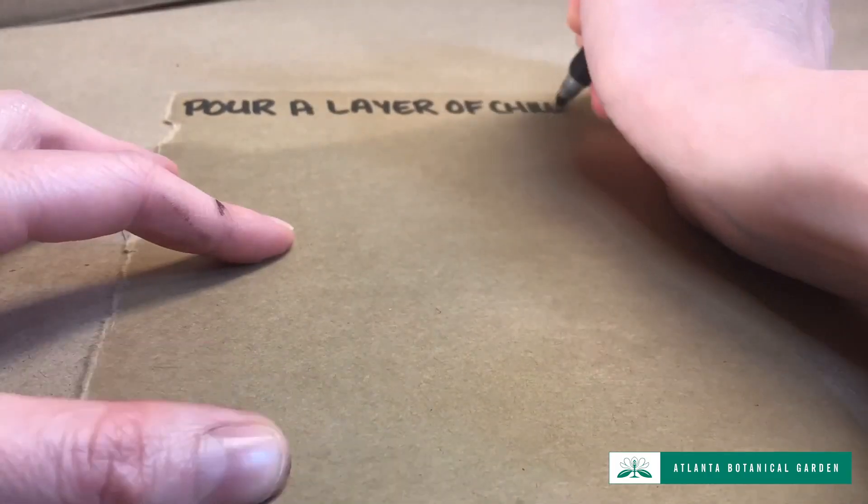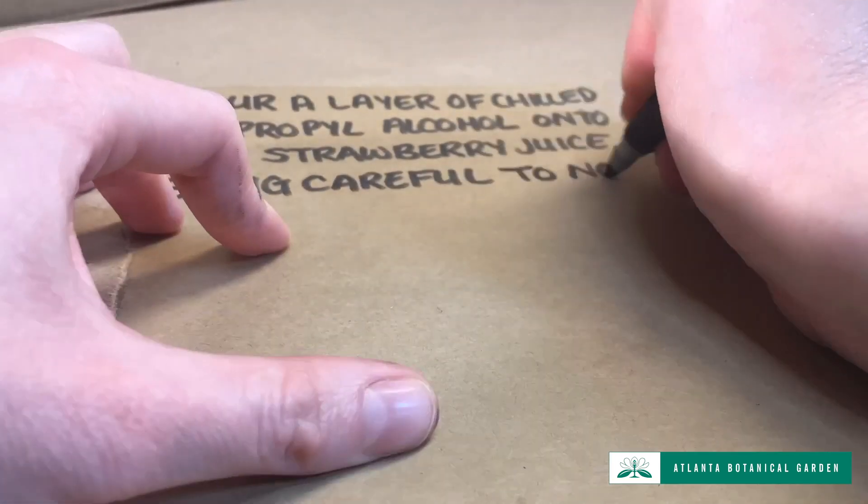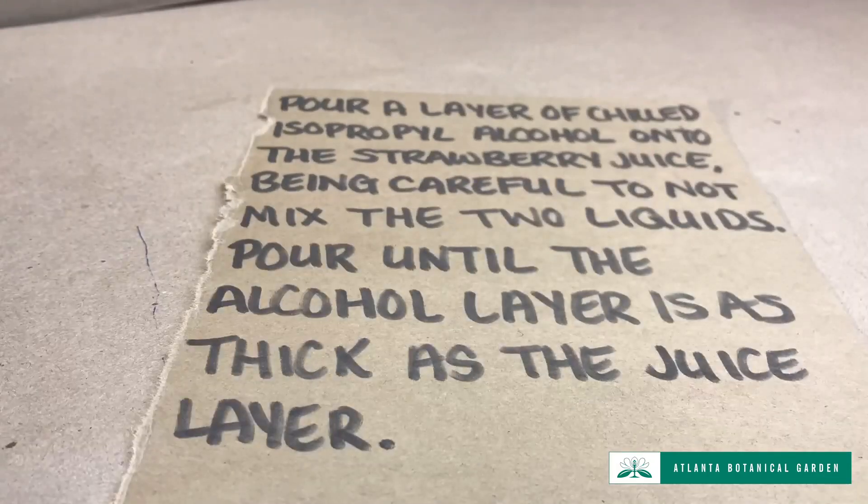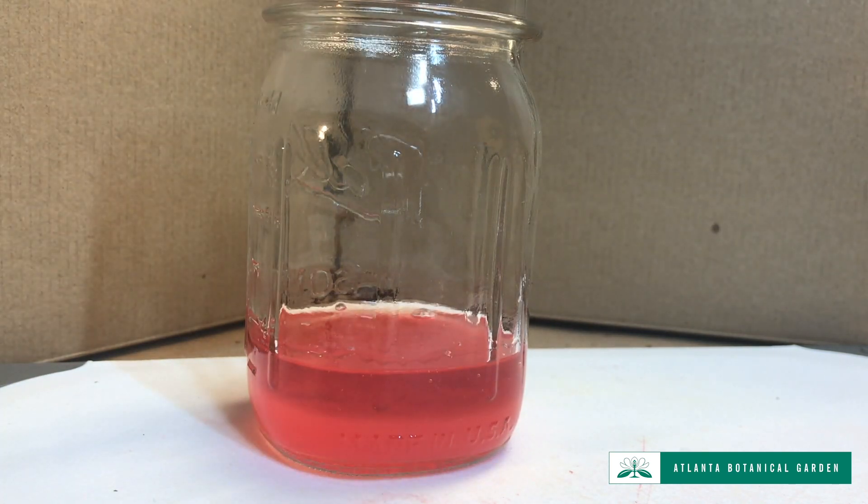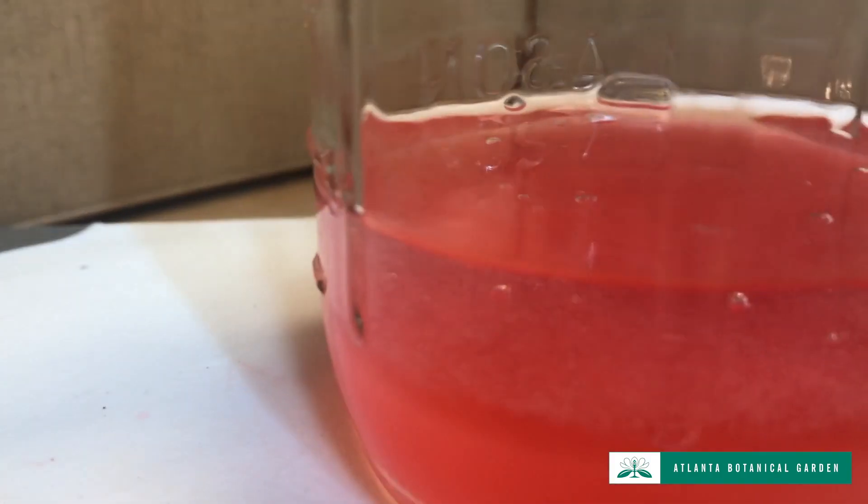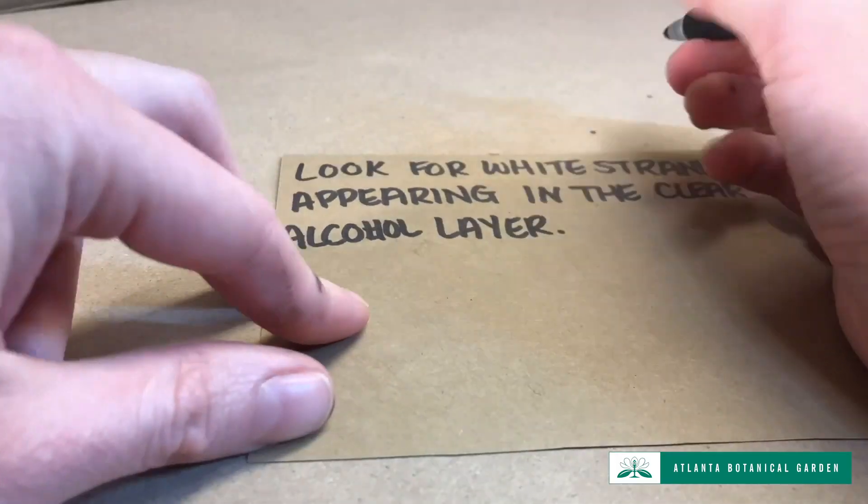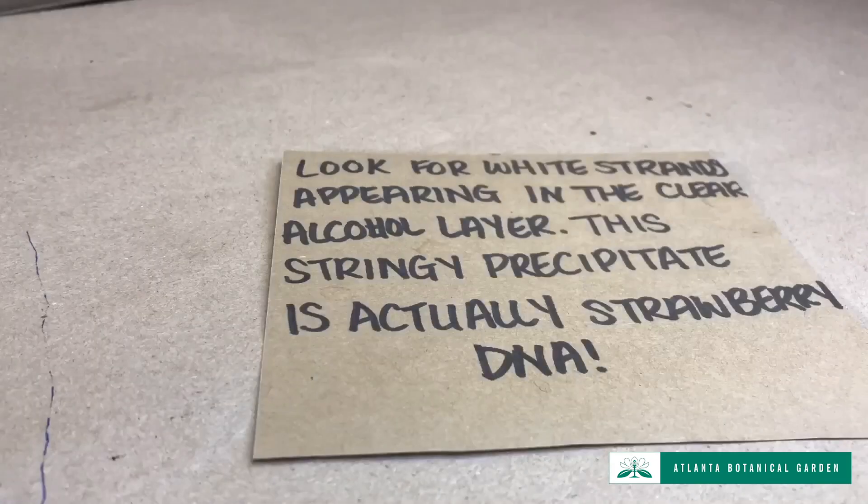Pour a layer of the chilled isopropyl alcohol onto the strawberry juice, being careful not to mix the two liquids. Pour until the alcohol layer is as thick as the juice layer. Look for white strands appearing in the clear alcohol layer. This stringy precipitate is actually strawberry DNA.